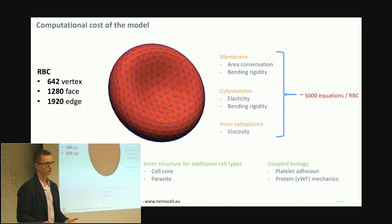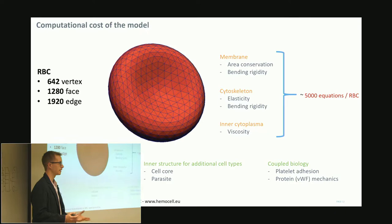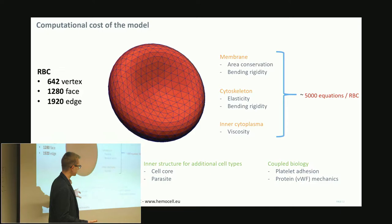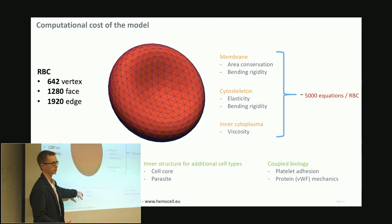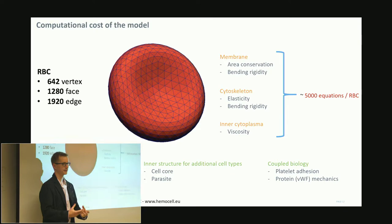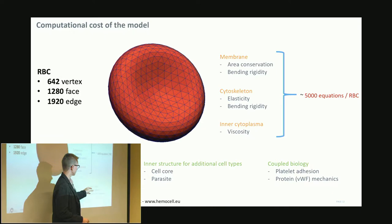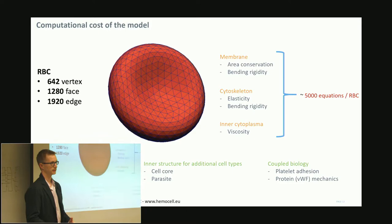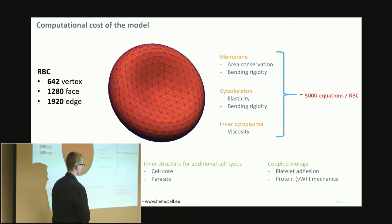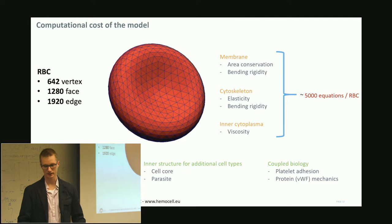If you can see the mesh, it's not a very high resolution, but with 2,000 edges, writing one equation per edge already gives 2,000 equations for just bending — and we need a couple more sets. So 5,000 equations is a lot, but it's the smallest amount that gives back the normal properties of red blood cells. HemoCell also has cells with a rigid cell core, cell types modeling a parasite inside, and coupling with additional biology like platelets sticking to the wall.